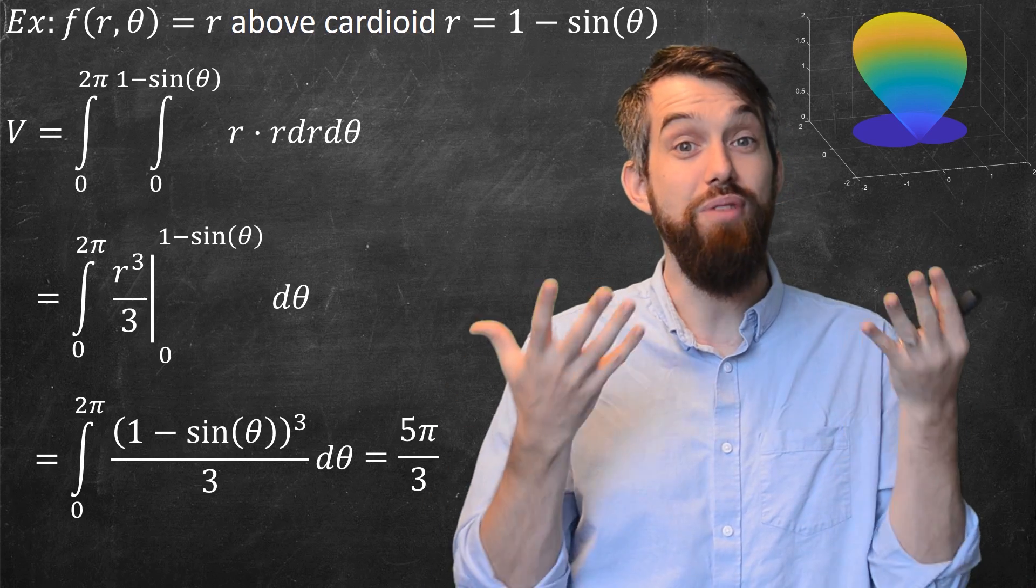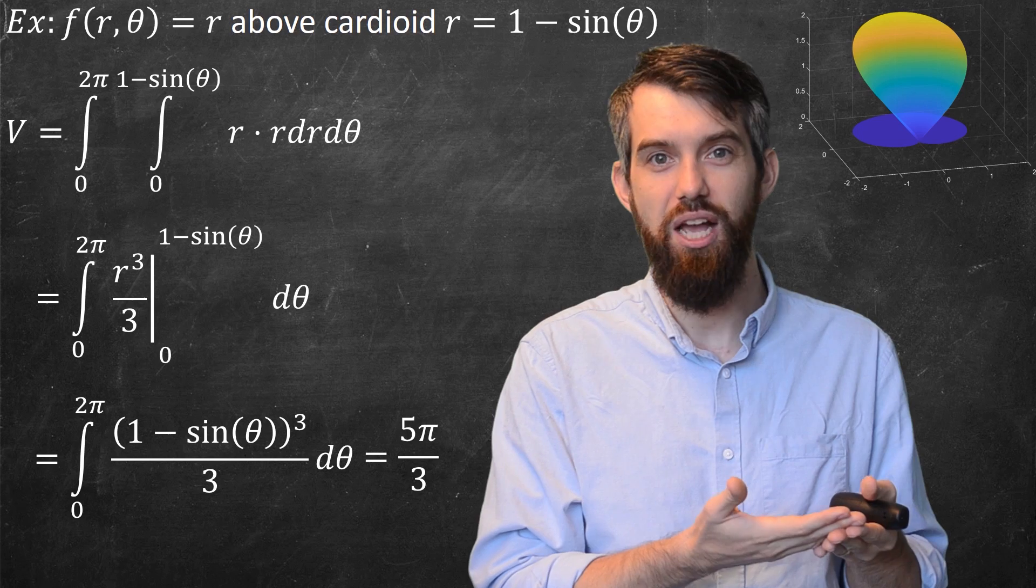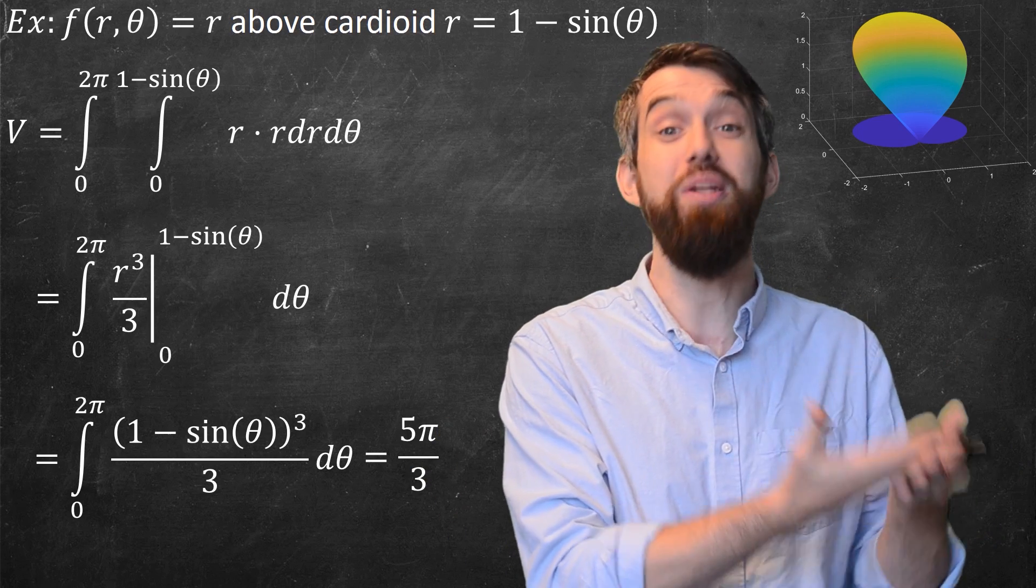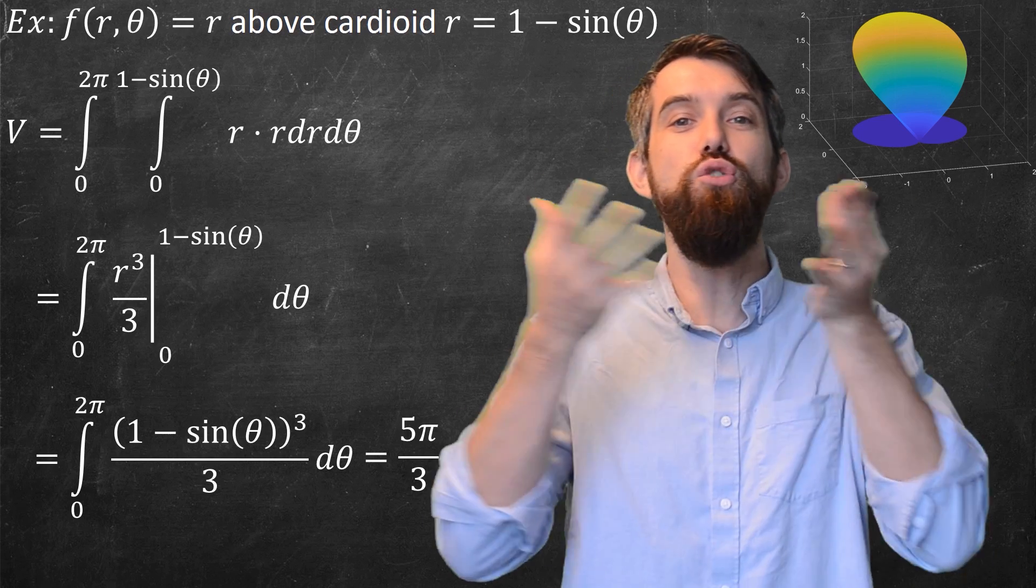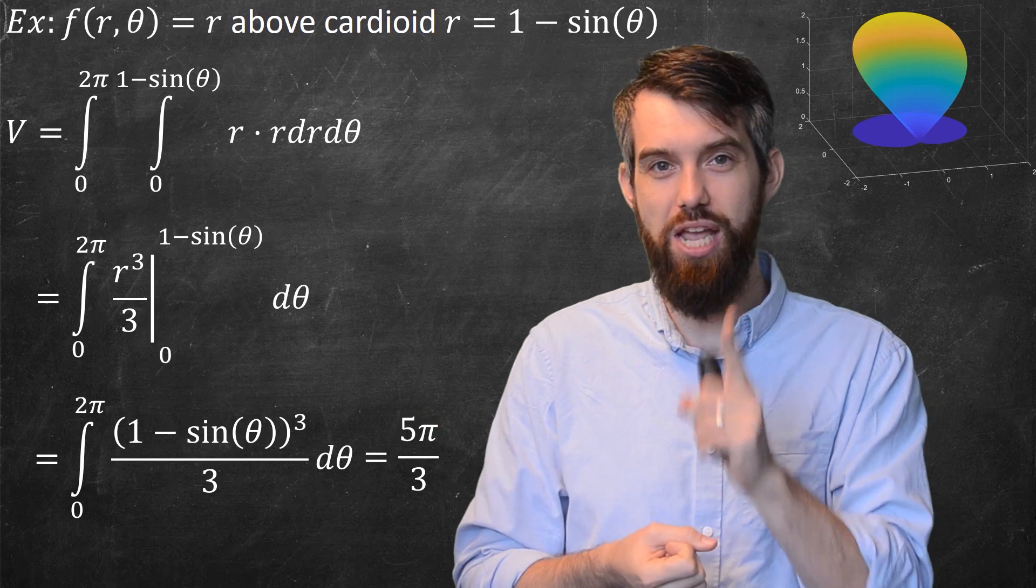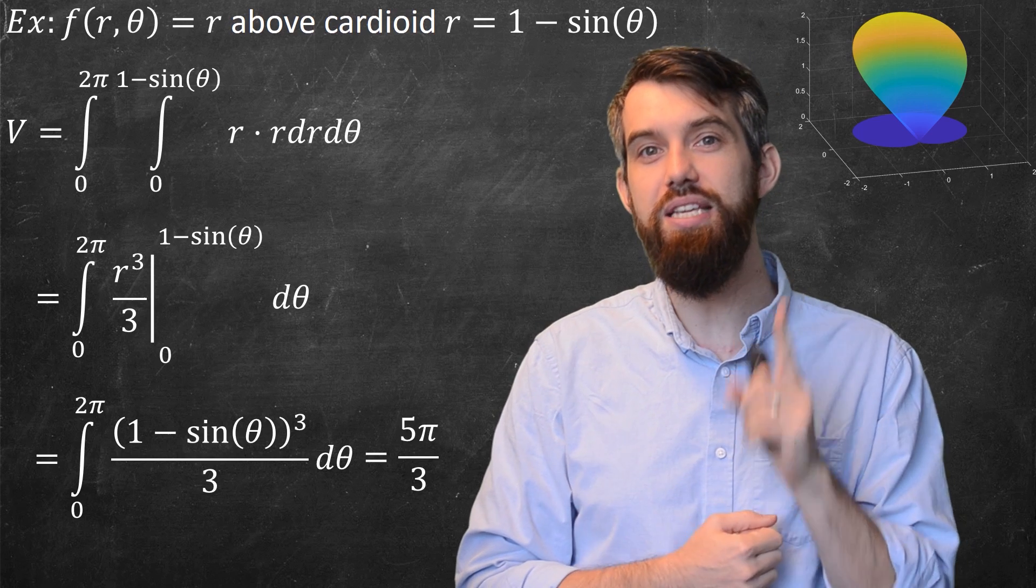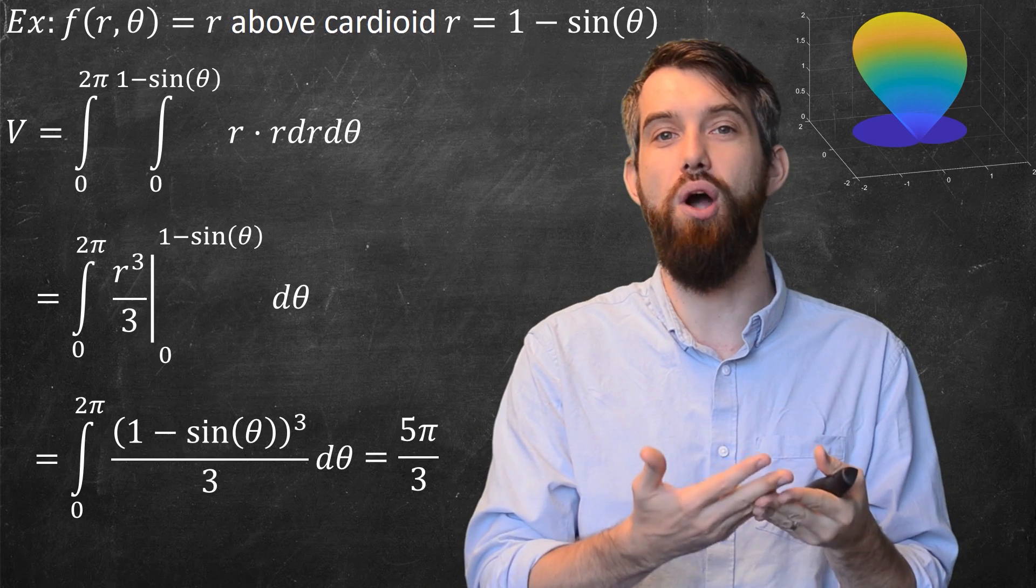So in this example, because our region was so naturally described using polar coordinates, we were able to extend the previous kind of double integral stuff that we did in Cartesian coordinates into polar coordinates. And the big change is that your dA is not just a dr d theta. Your dA is an r dr d theta.